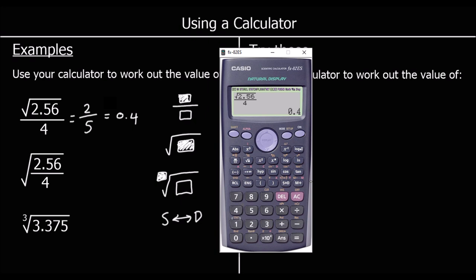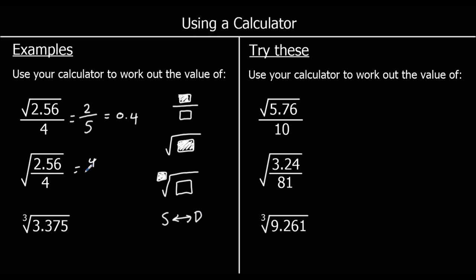For the second one, you can see that the square root is over the whole of the fraction. So this time, we want to press the square root button first, and then inside the square root press the fraction button. Then we just type 2.56 on the top, click down, 4 on the bottom, press equals. So we've got 4 fifths, or 0.8.